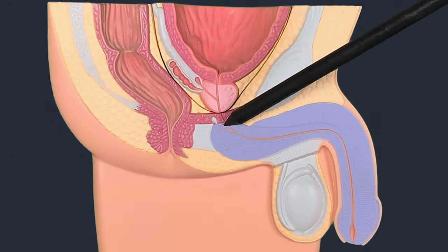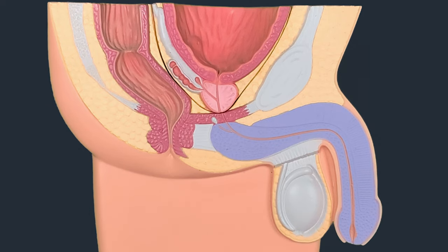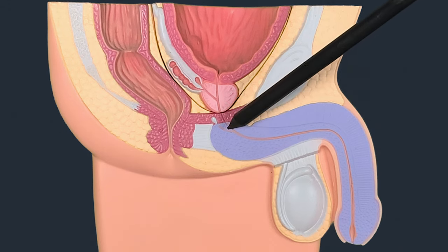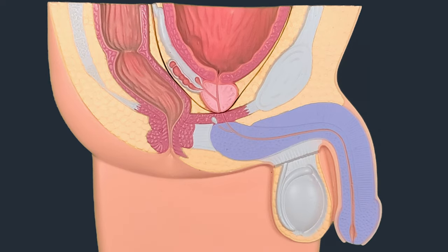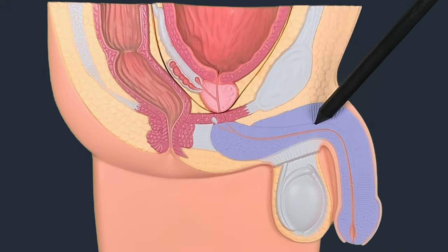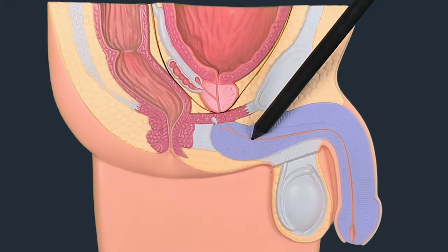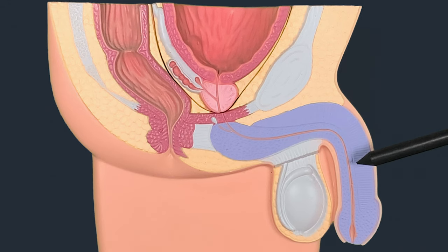The prostatic urethra is the widest part of the urethra. After this, at the apex, the urethra passes through a muscle — this part is known as the membranous urethra, the most delicate part of the human urethra. After that, the remaining urethra is called the spongy urethra, which has two parts: a horizontal part called the bulbar urethra and a vertical part known as the penile urethra.